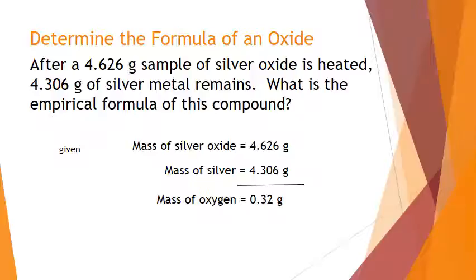Now, essentially, we are done using this number 4.626. That is done. We are left with these two numbers and these are the two values that we're going to proceed with. We need to know the mass of the individual elements here.